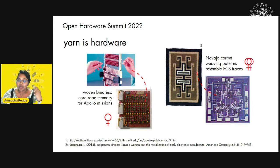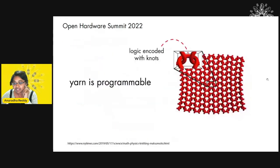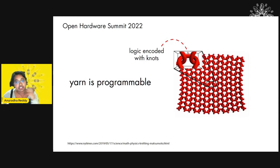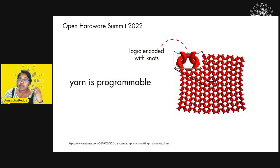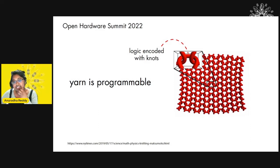What we call hardware is something we are deeply indebted to — our understanding of it depends on our understanding of yarn. The other provocation is that yarn is programmable. Here I want to shout out to physicist Dr. Elizabetta Matsumoto. She talks about how knitting is coding and that yarn is programmable. With every stitch you make, you can exploit the mathematical and mechanical properties of yarn. She uses knot theory to understand biologically inspired engineering and mathematics, and says you can encode certain logic and information by using certain kinds of knots.